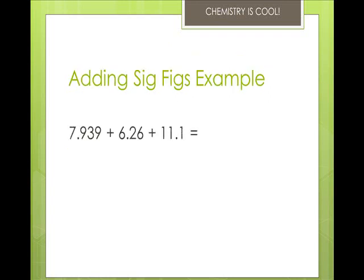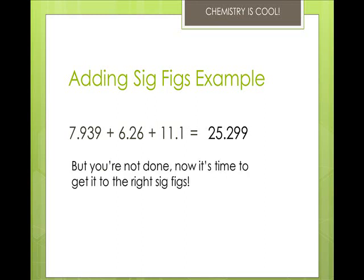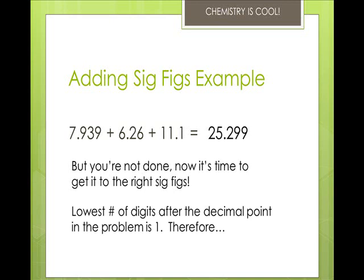So let's say we have 7.939 plus 6.26 plus 11.1. When you add these all together in your calculator, you get 25.299. The least number of decimals after the decimal point is one. Therefore, your answer is 25.3.